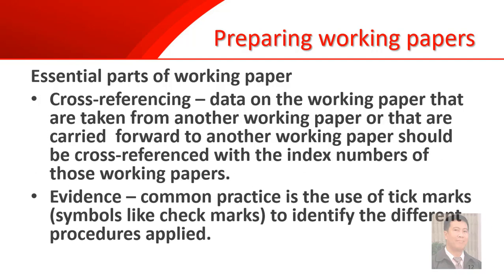When identifying the evidence that you collected, the common practice is to use tick marks or symbols. For example, an asterisk may indicate that a confirmation had been performed, meaning you collected confirmations from a third party. An X might indicate when you performed observation and collected physical evidence. It should be noted that if you use tick marks, each symbol should be unique for each procedure that you performed.